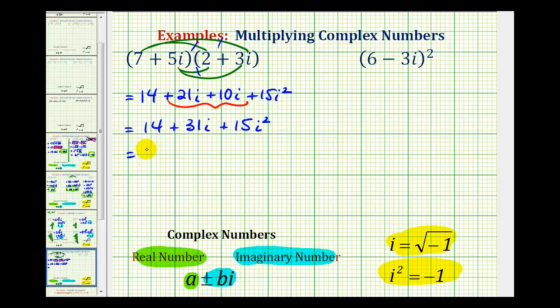And since i squared is equal to negative one, we can replace i squared with negative one. So we'd have fourteen plus thirty-one i, plus fifteen times negative one. Well fifteen times negative one is negative fifteen, and now we can add negative fifteen and fourteen, which would be negative one, so our final product will be negative one plus thirty-one i. When we give our final complex number, we should put the real part first, and the imaginary part second.